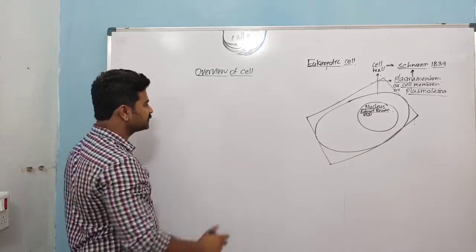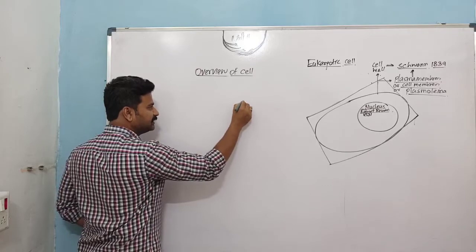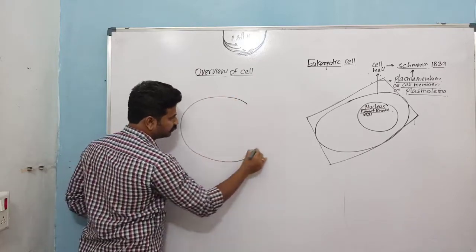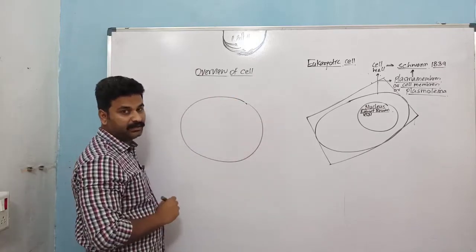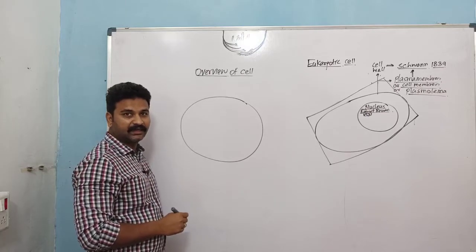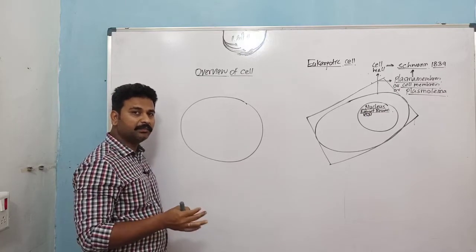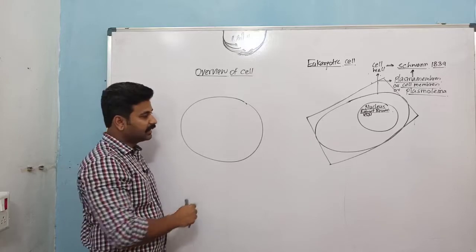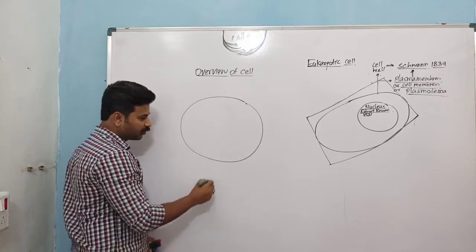But there are cells in which the nucleus is not visible because it is not membrane-bound. They do have a nucleus, but it lacks a membrane. Such types of cells are called prokaryotic cells.